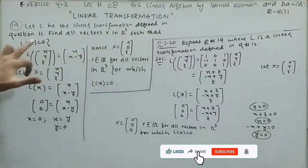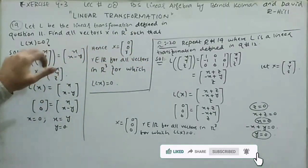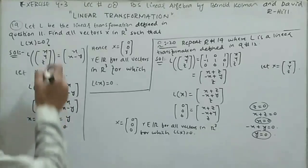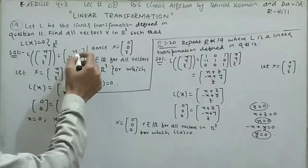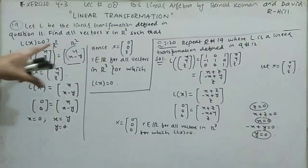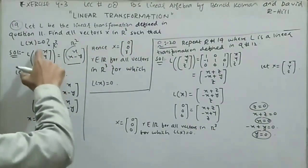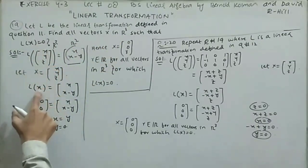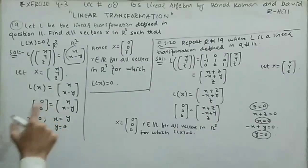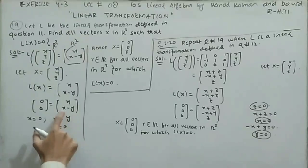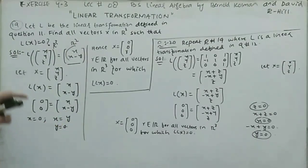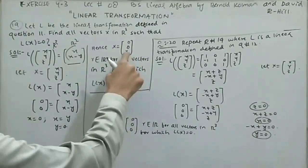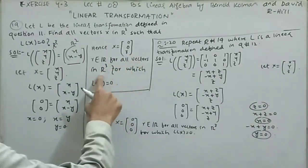Question 19: Let L be the linear transformation defined in question 11, where L(x,y,z) = (x, x-y). Find all vectors x in R³ such that L(x) = 0. Setting L(x,y,z) = (0,0), we get x = 0 and x - y = 0, so y = 0. Since z is not constrained, z can be any real number r. The solution is x = (0, 0, r) for any real r.